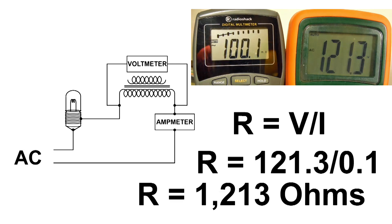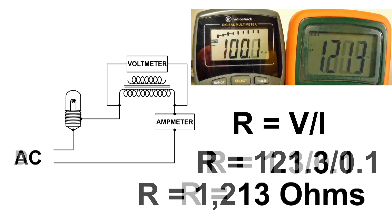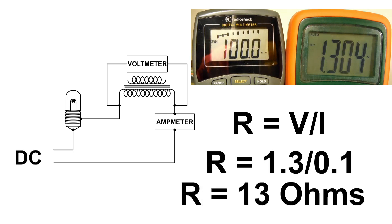Now let's take a look at the AC results. That's quite a bit different. To get the same amount of current we had to turn the voltage up to 121.3 volts. Dividing that by 100 milliamps, the resistance for AC — or the impedance — is 1,213 ohms. I hope this helps you understand the difference between DC ohms and AC impedance.